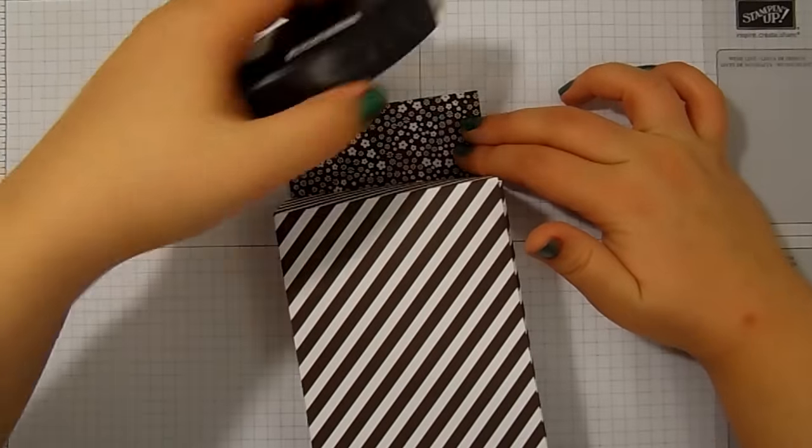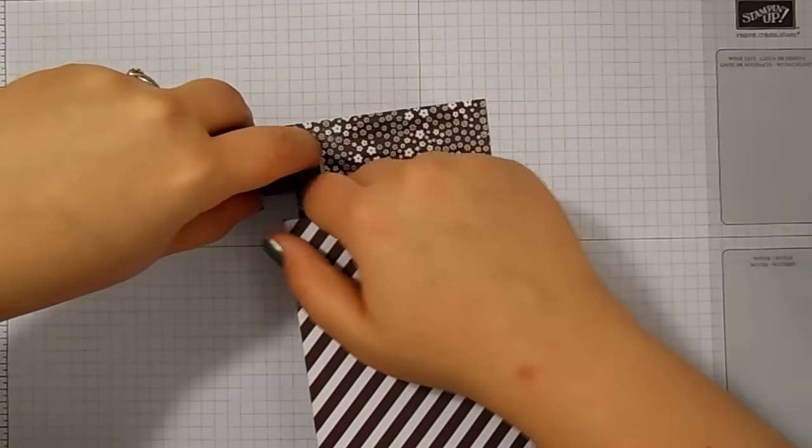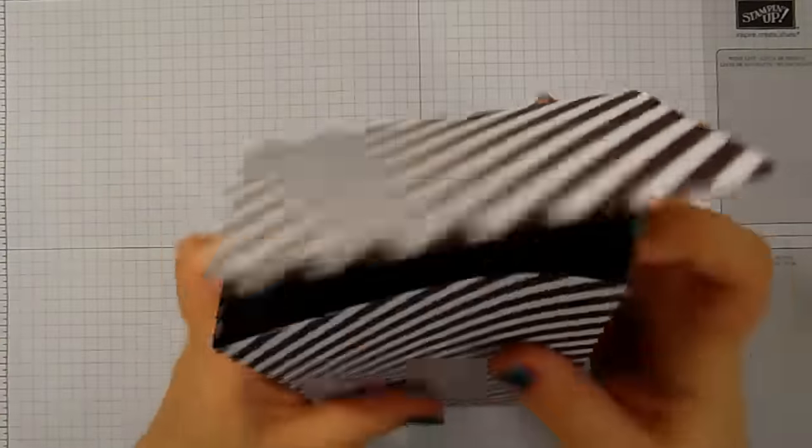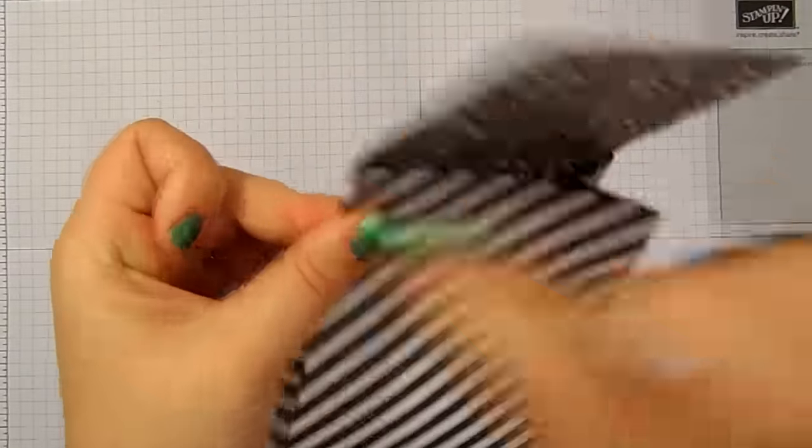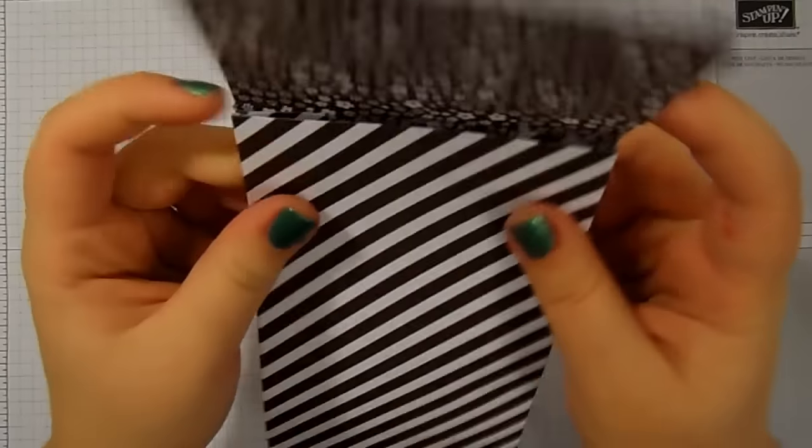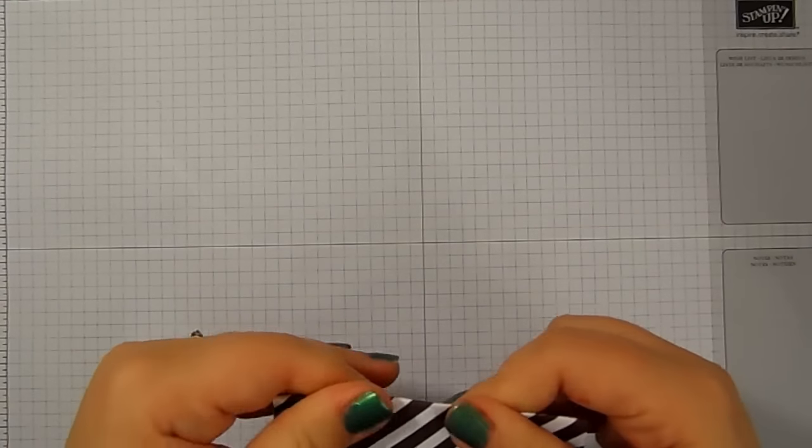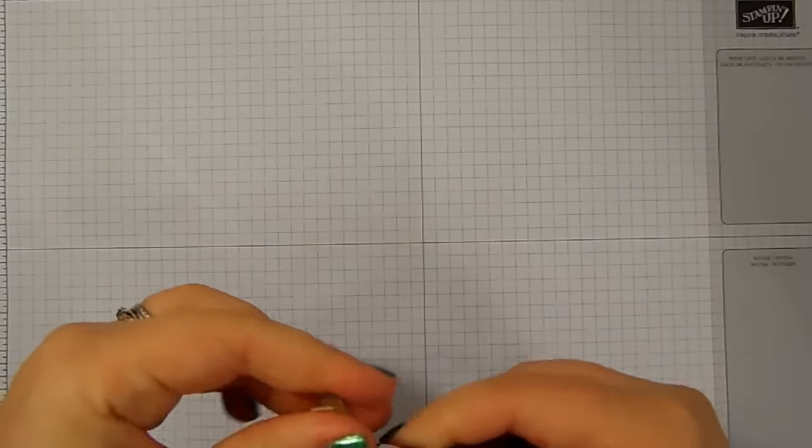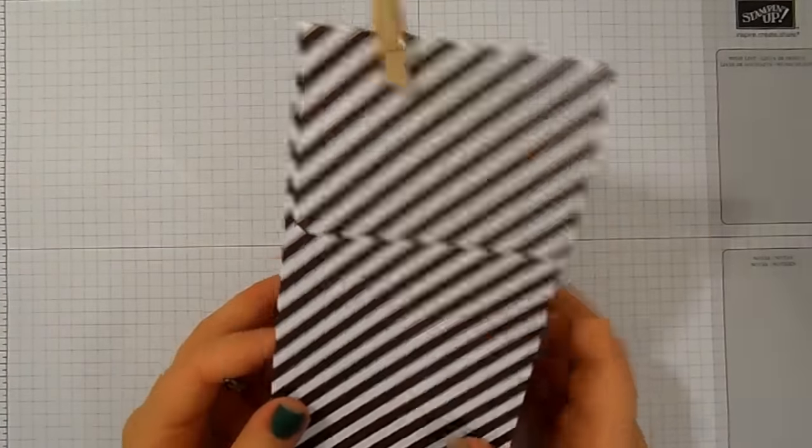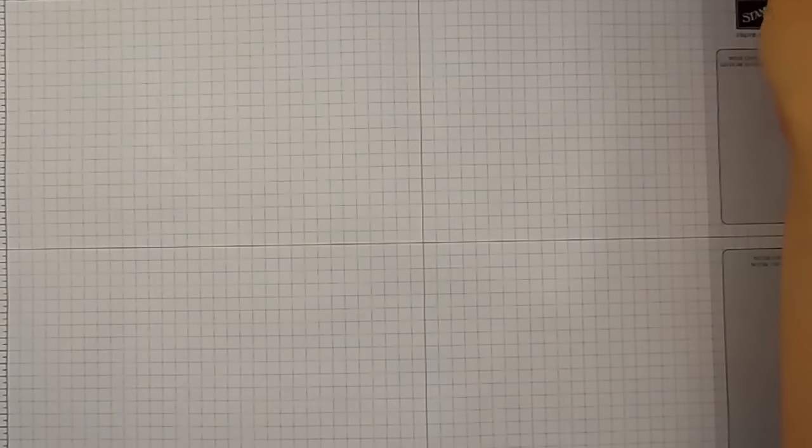For the bottom we're going to put two sides in first and the back, and then this is our front. So we're going to pop our fast fuse on there just like that, and to close the box just pinching the sides. Make sure it's pinched all the way down, and we're going to keep it closed with our clothespins like so. Isn't it super cute?